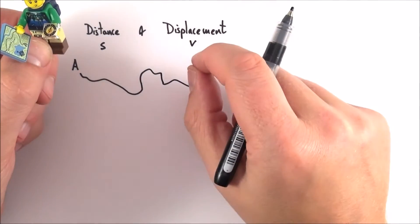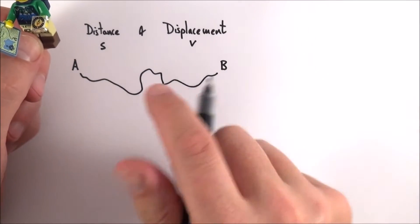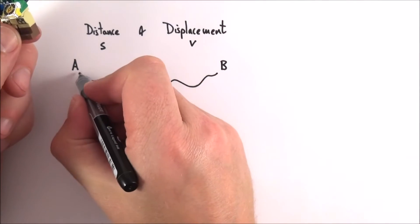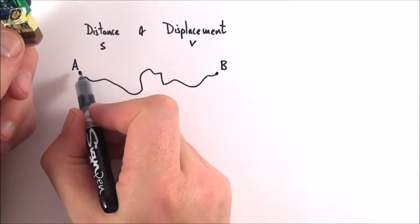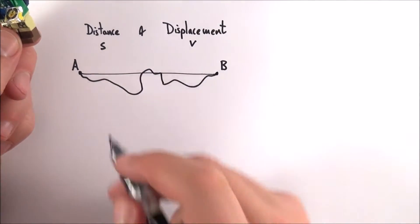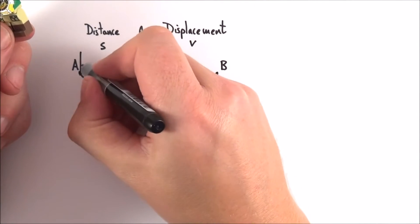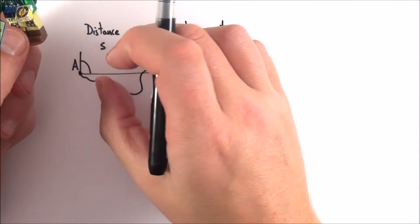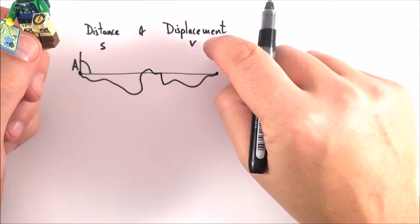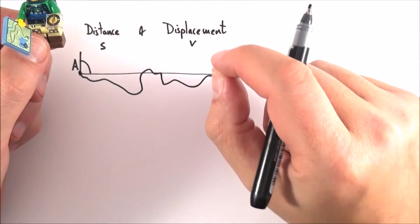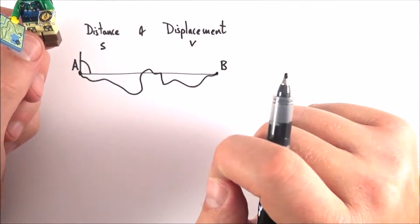However the displacement is the direct distance or the shortest distance from point A to point B. And when we measure the displacement we don't just give the length in meters, we also think about the angle that this is, perhaps an angle that was measured in degrees. So because displacement is a vector it must have a magnitude, a size, as well as an angle or direction.